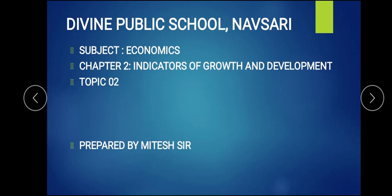Today in the second topic, or second lecture, we are going to learn about indicators of development — that is the main point of this chapter. We will learn how they are helpful, how they are calculated, what data is given under them so we can compare different countries to know whether a country is developed, underdeveloped, developing, or growing. We will also cover the limitations of these indicators.